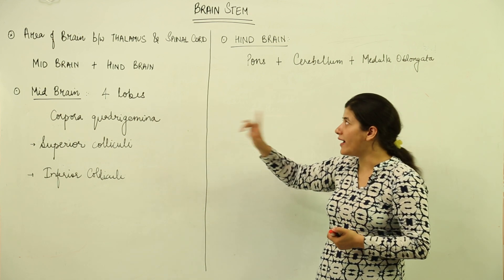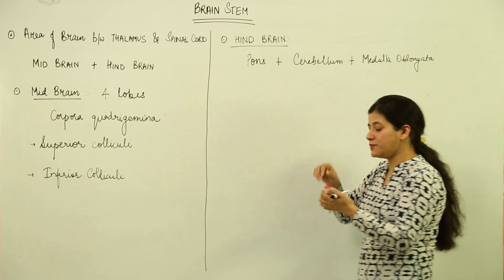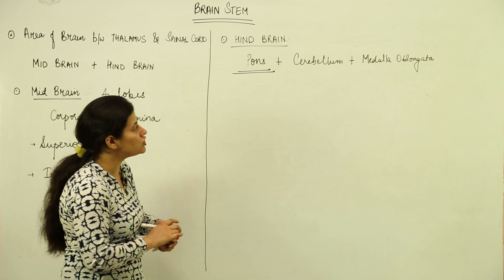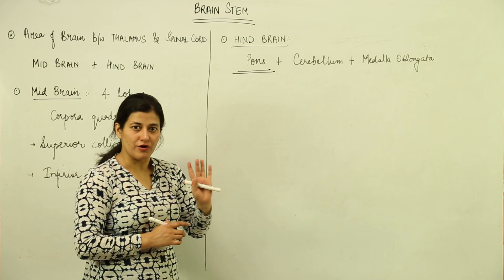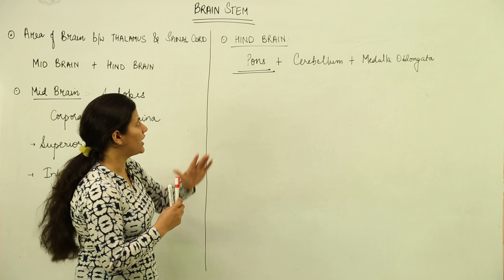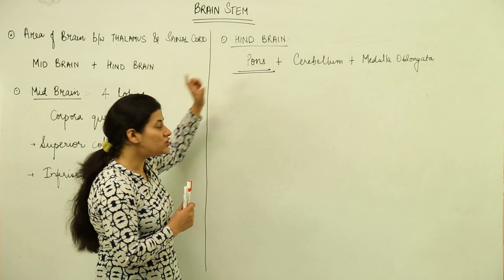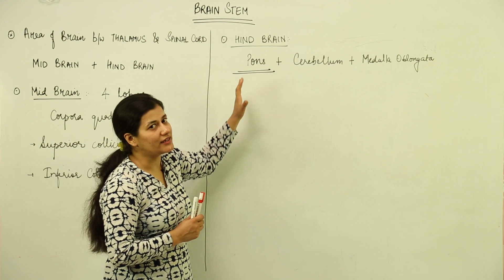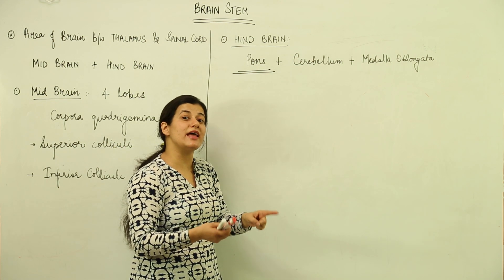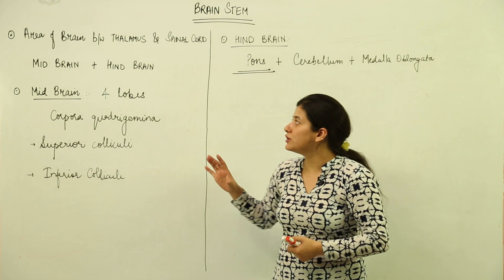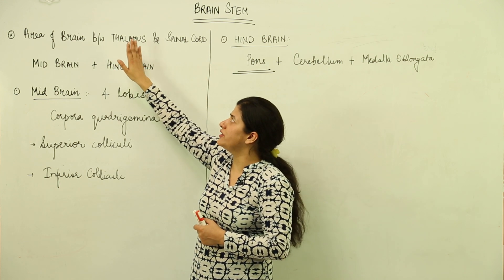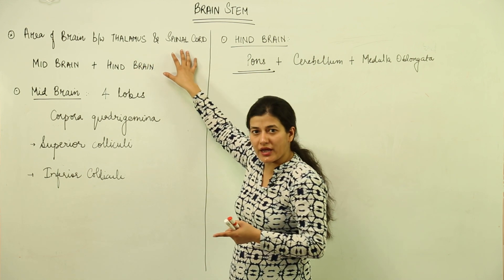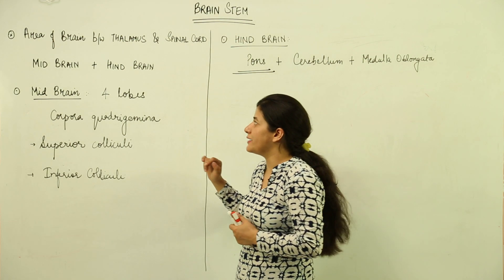The brain stem is primarily formed by the midbrain and one part of the hindbrain known as pons — or pons varoli. Pons forms the floor of the brain stem and serves as the connection between the cerebellum and the cerebrum of the forebrain. This region lies between the thalamus, which is part of the forebrain, and the spinal cord.